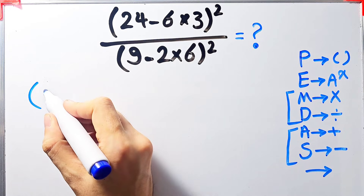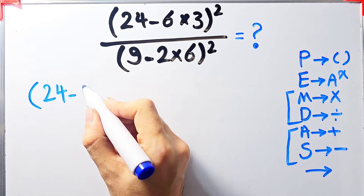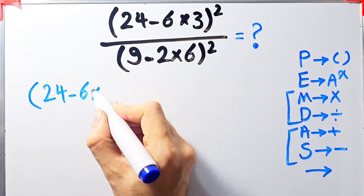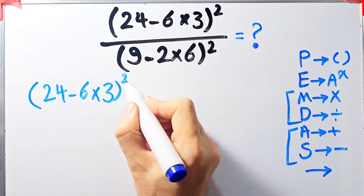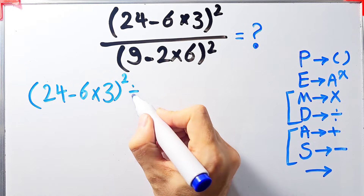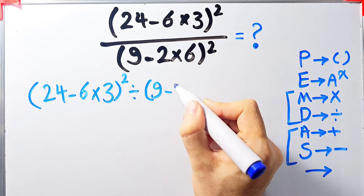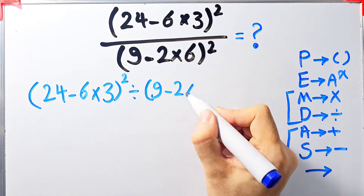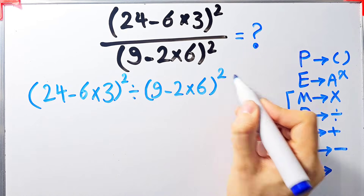We have 24 minus 6, times 3, all to the power of 2, divided by 9 minus 2 times 6, all to the power of 2.